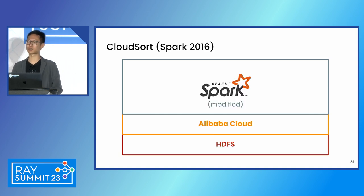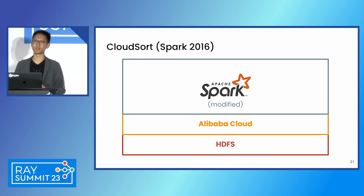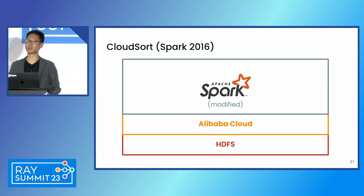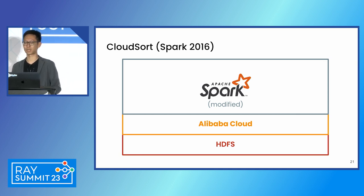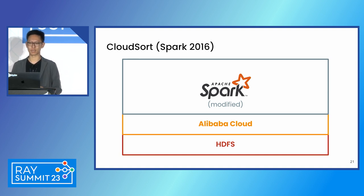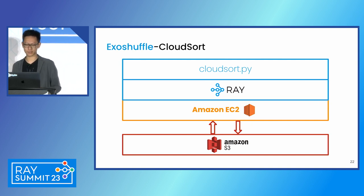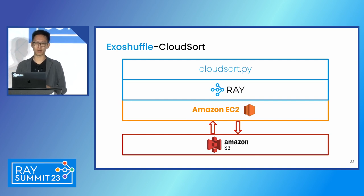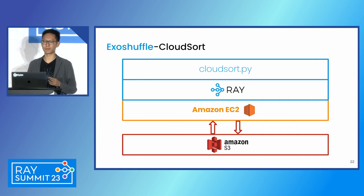The previous CloudSort record was set by Apache Spark in 2016. As Stephanie mentioned, this was a specialized fork of Spark implementing some low-level optimization to make the sorting happen, running on Alibaba Cloud with data on an HDFS cluster on traditional hard disk drives. In our ExoShuffle CloudSort benchmark, a few things are different. The most notable thing is that we're able to run this on top of Ray — a public release version of Ray, unmodified. We simply implement the sorting strategies and algorithms on top as a Python program, which runs on the Ray cluster, which in turn runs on an Amazon EC2 cluster.